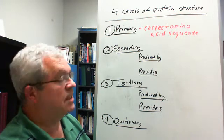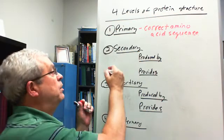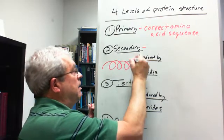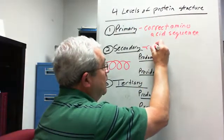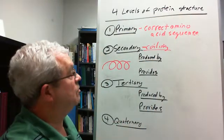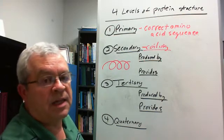But then we come to the secondary structure. What is the secondary? I am only going to concentrate on the coiling, and sort of represent it like that. The coiling of the amino acid chain. And what is that produced by?